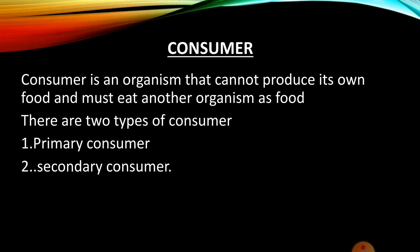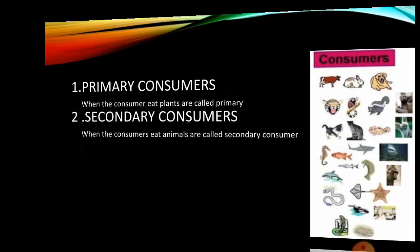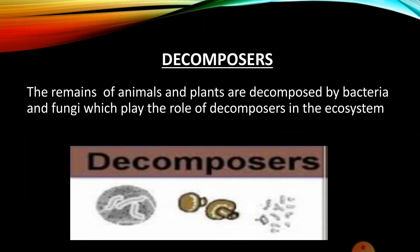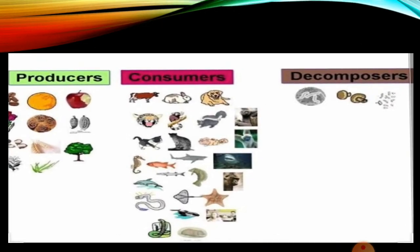Producers: A producer is an organism that produces its own food. There are two types of consumers: primary and secondary consumers. The remains of animals and plants are decomposed by bacteria and fungi, which play the role of decomposers in the ecosystem.